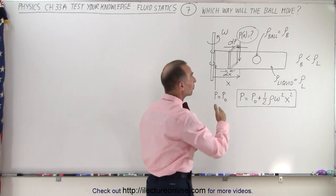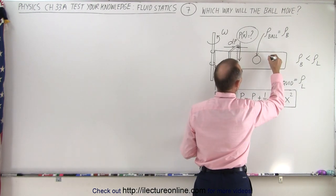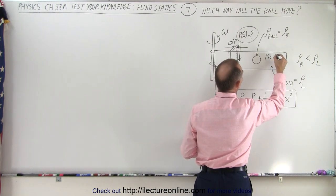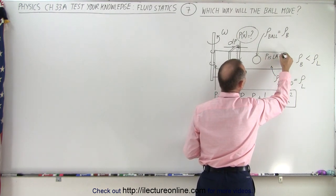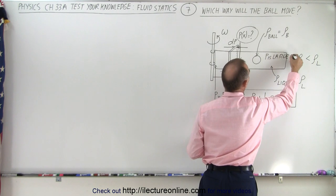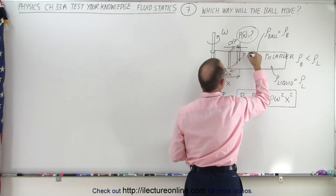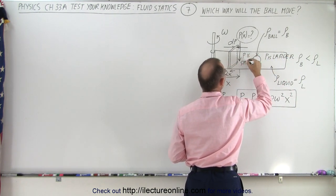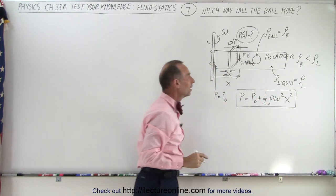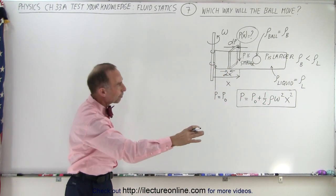Which means that on the right side of the ball the pressure is larger, so p is larger on the right side of the ball, and on the left side of the ball p is smaller. I don't know if you can read that, but there you go. On the right side the pressure is greater, on the left side the pressure is smaller.